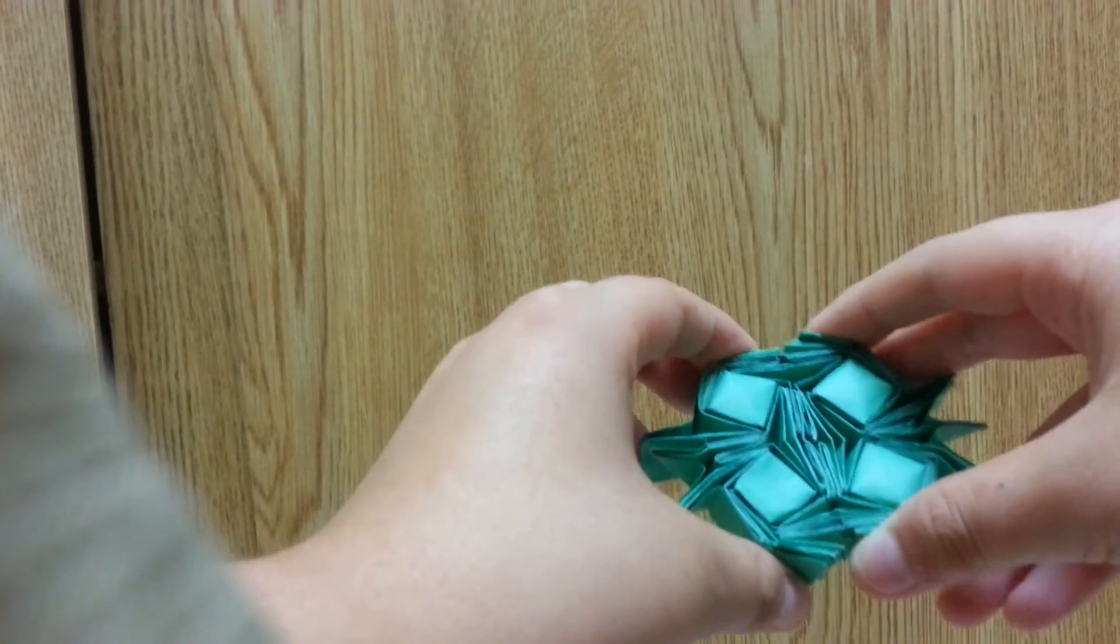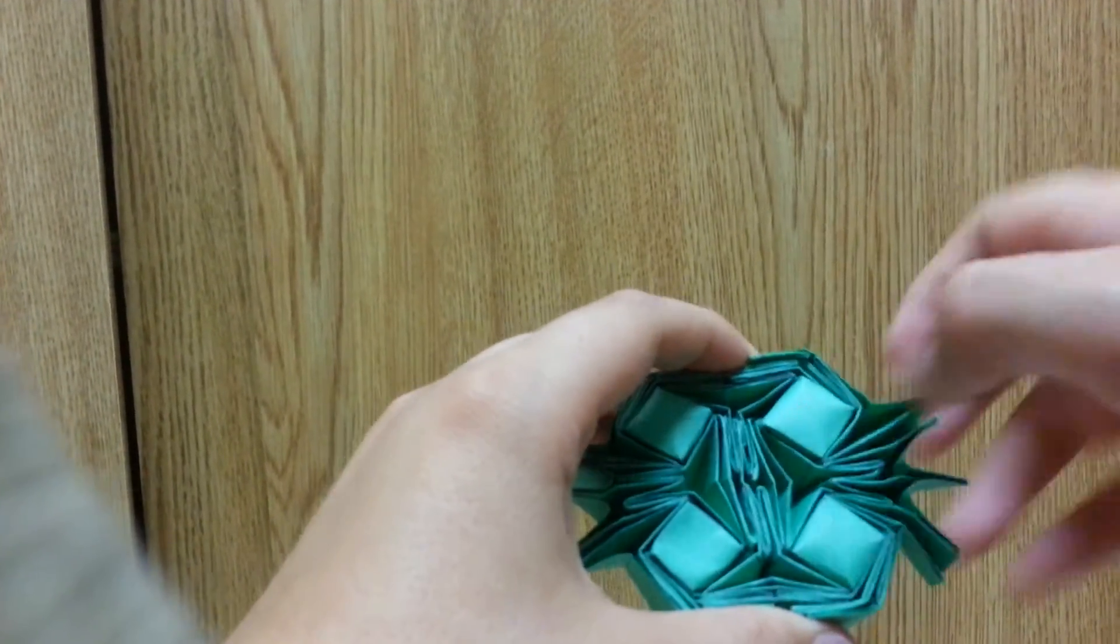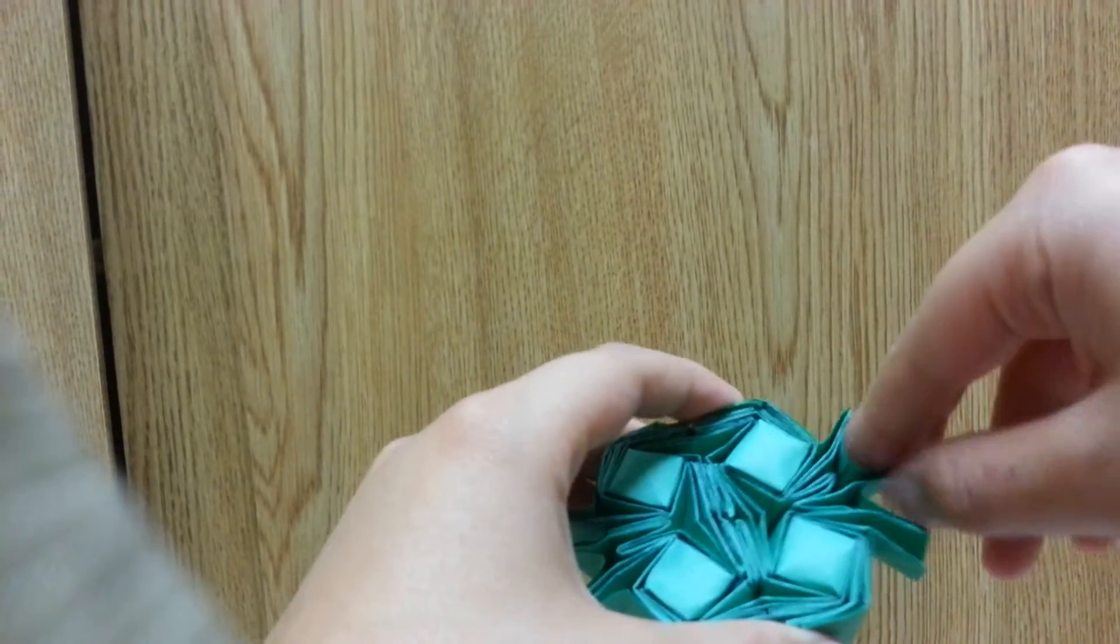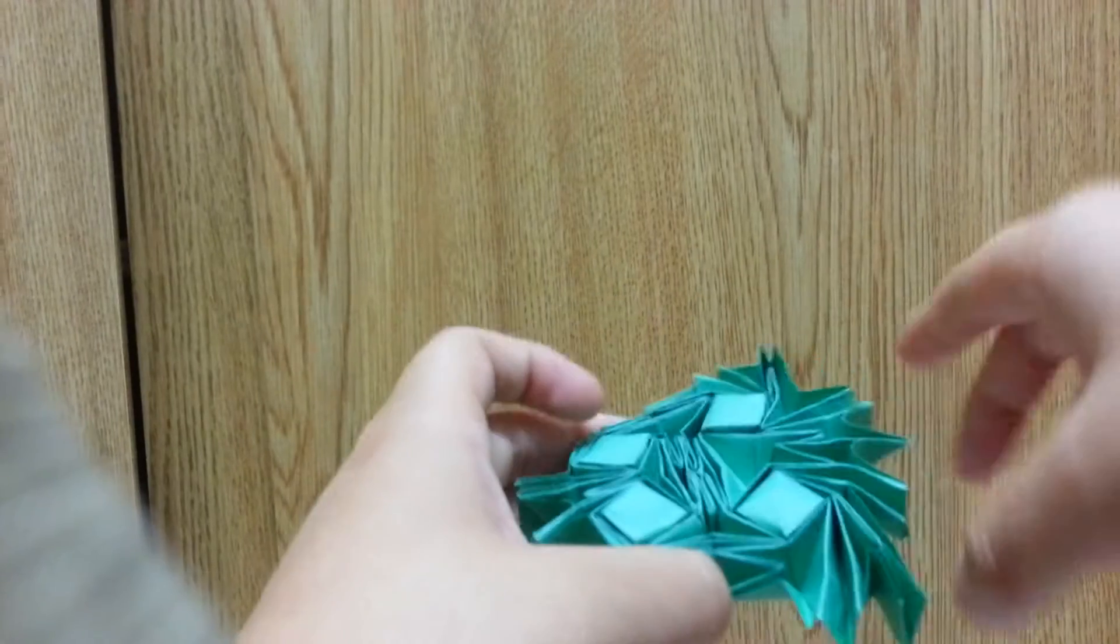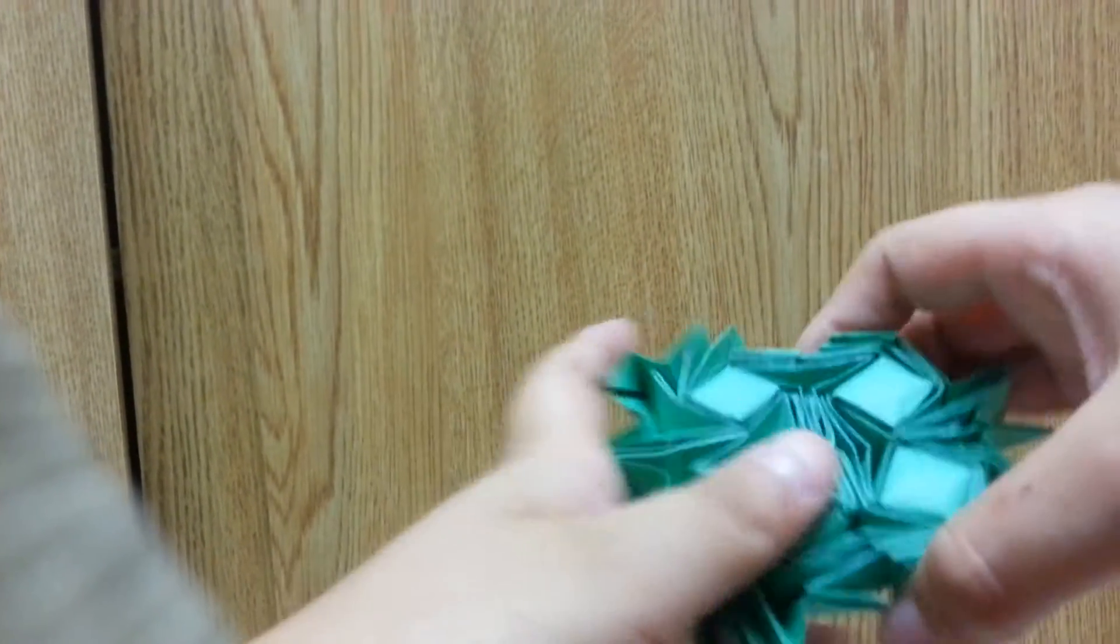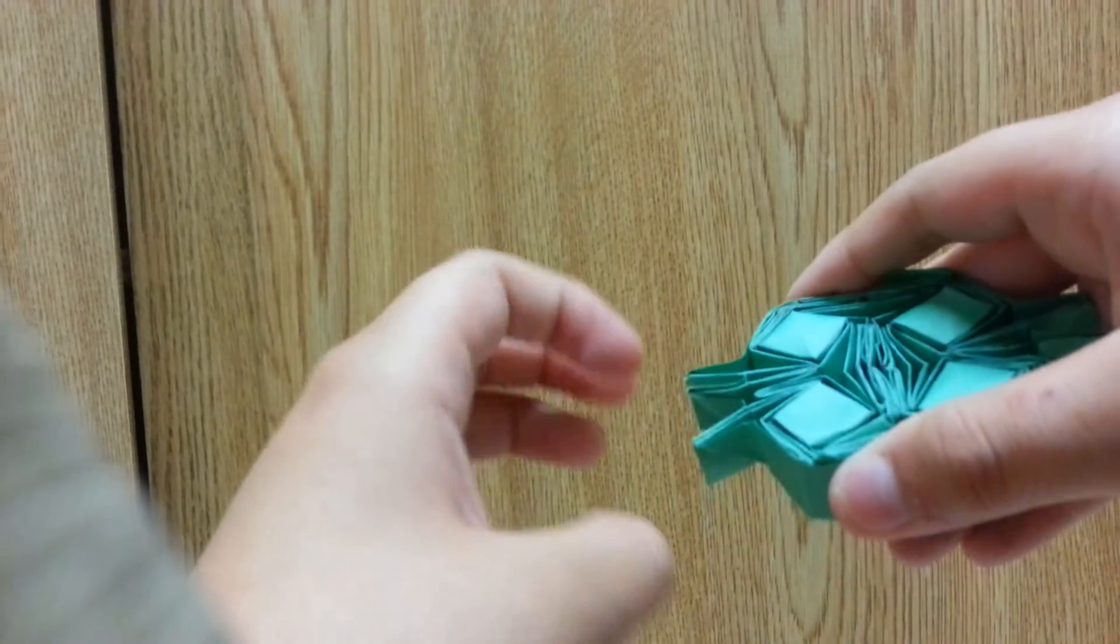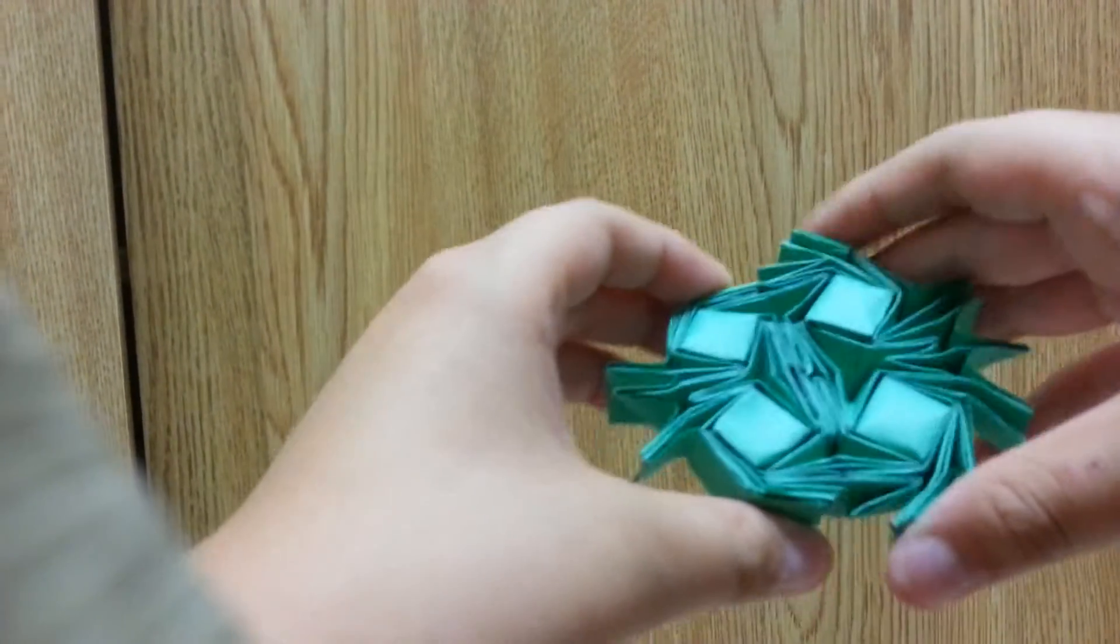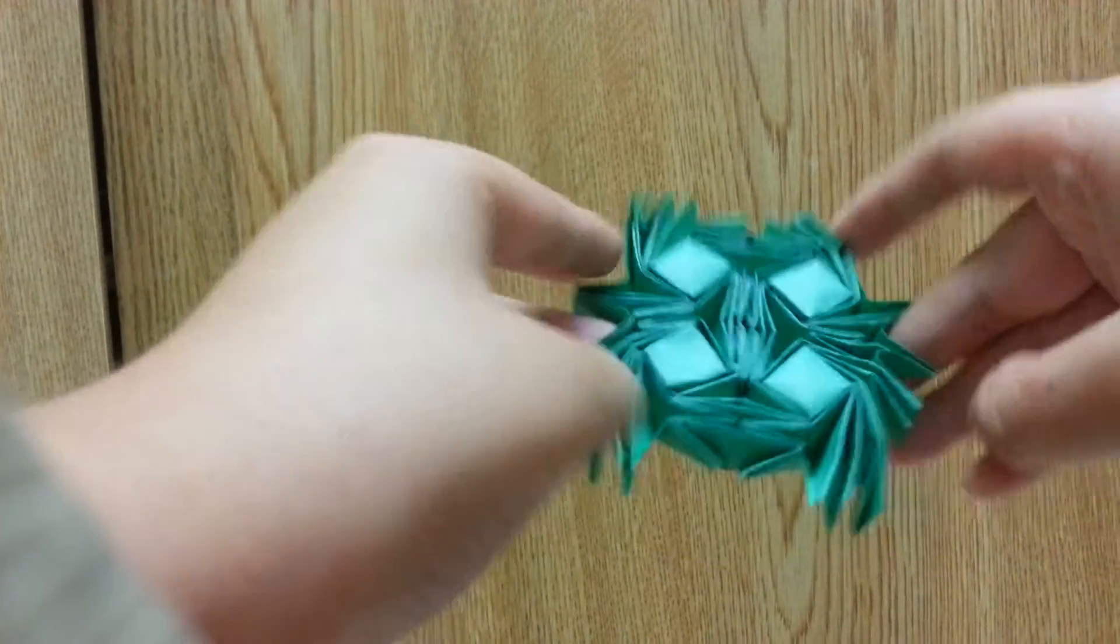This is basically like a Flasher X Tessellation, because around the squares it has kind of the same folds. But it's not like an X anymore, so it's not really a Flasher X Tessellation, so it's just a crazy Flasher Tessellation. Because when you open it up, it just looks crazy.